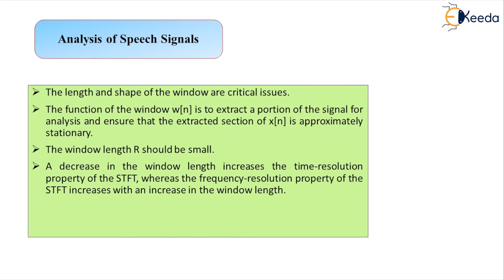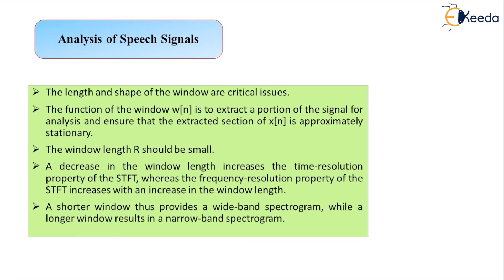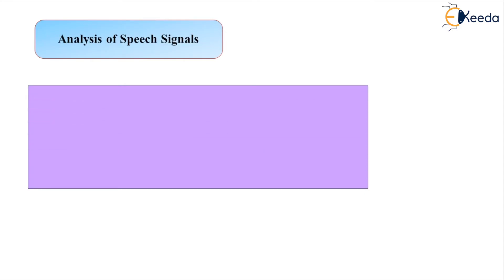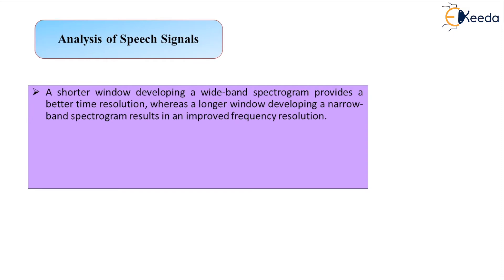A shorter window will provide a wideband spectrogram — the spectrogram being the plot of information in the frequency domain — whereas a longer window will result in a narrowband spectrogram. The use of a shorter window develops a wideband spectrogram providing better time resolution, while a longer window develops a narrowband spectrogram resulting in improved frequency resolution. For providing a reasonably good estimate of the changes in the vocal tract and excitation, the wideband spectrogram is preferable, and the window size is selected to be approximately close to one pitch period.